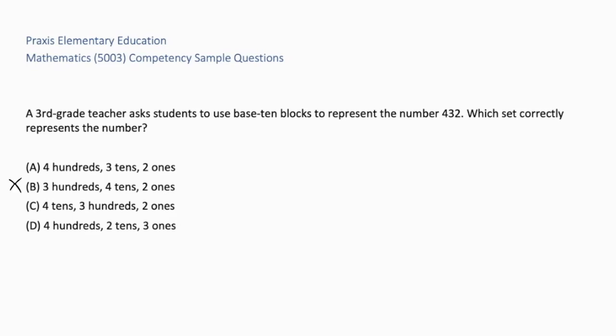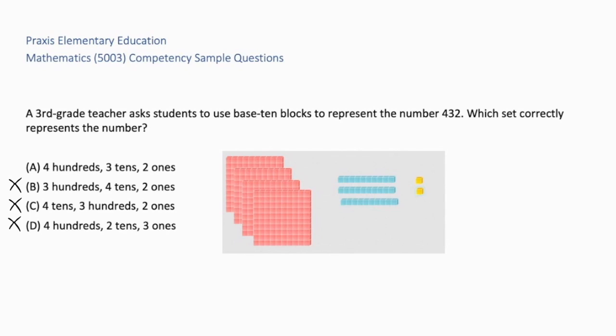B, students may confuse tens with ones. C, place values have been misordered. D, they have swapped out the tens and the ones. If we look at this visual, it correctly represents the number 432. You have 4 hundreds blocks, 3 tens, and 2 ones. So the correct answer is A, 4 hundreds, 3 tens, and 2 ones.